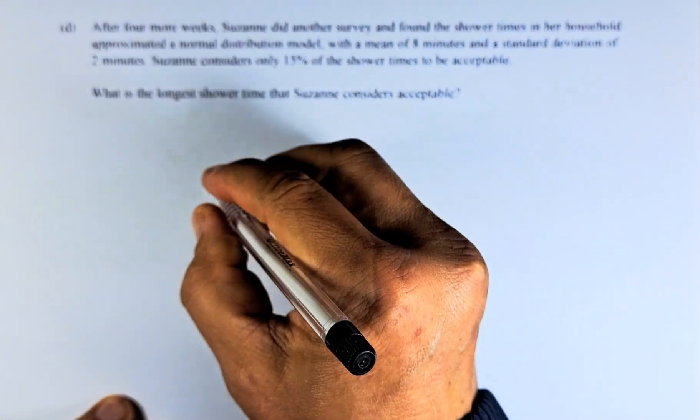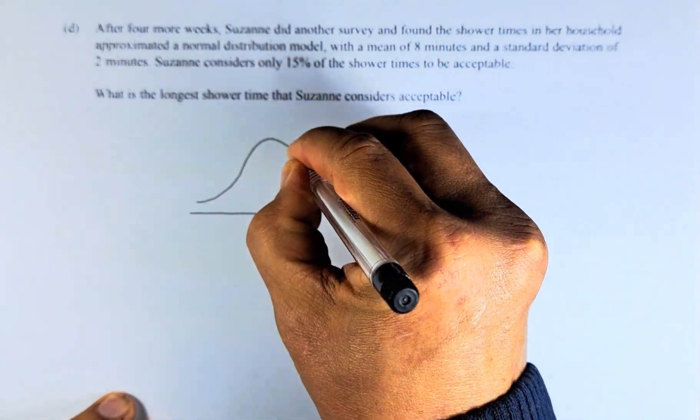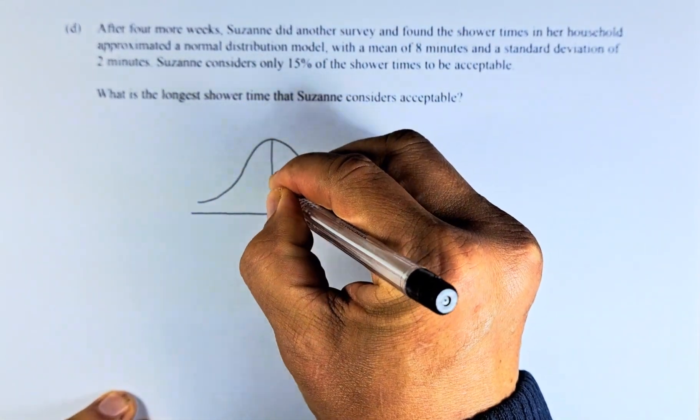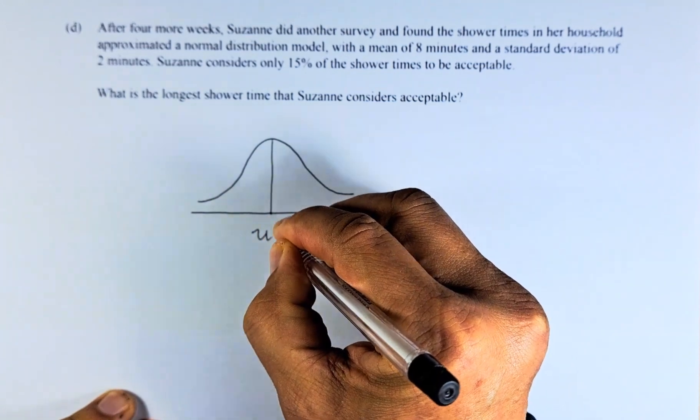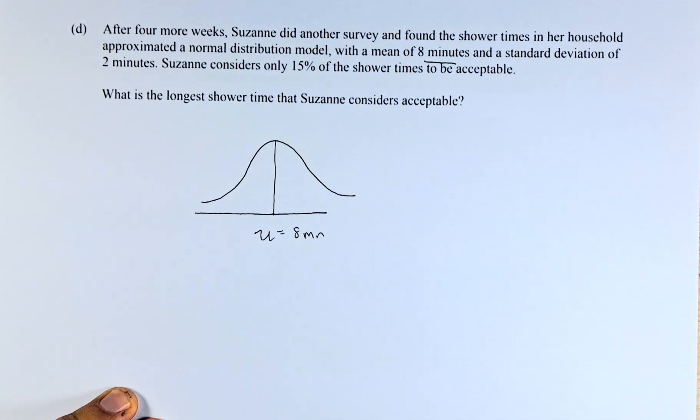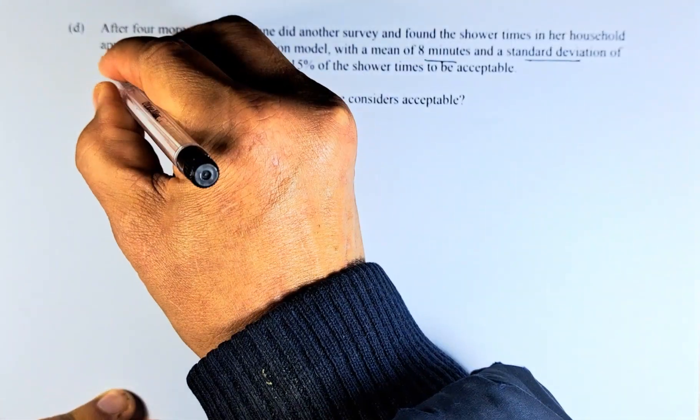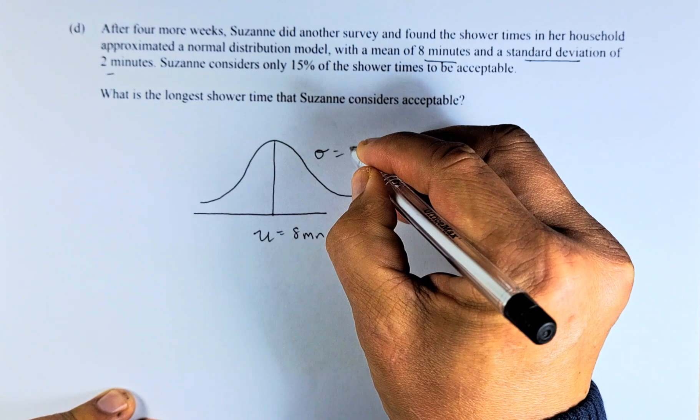We are going to draw a normal distribution. The mean is always represented by mu. Mu equals 8 minutes, so the mean is 8 minutes. Standard deviation is 2, so you have sigma equals 2.